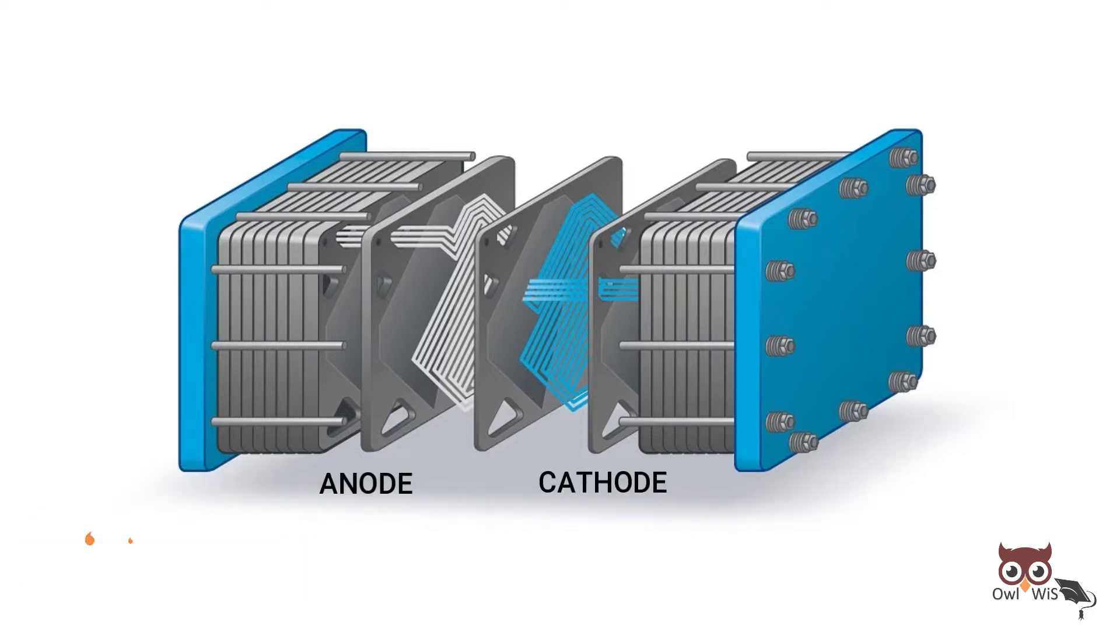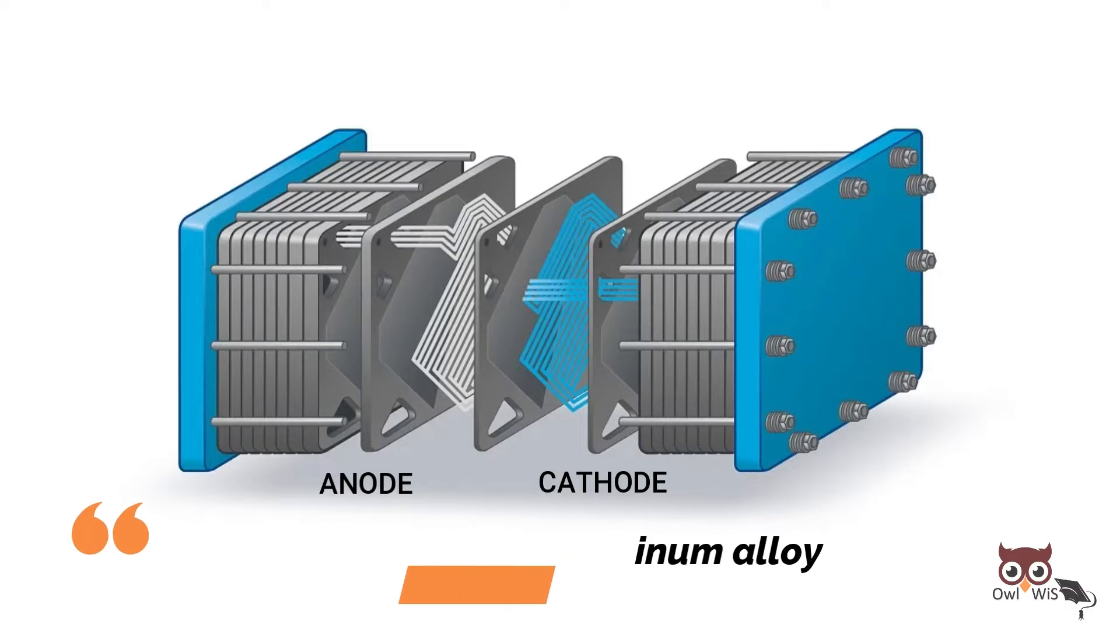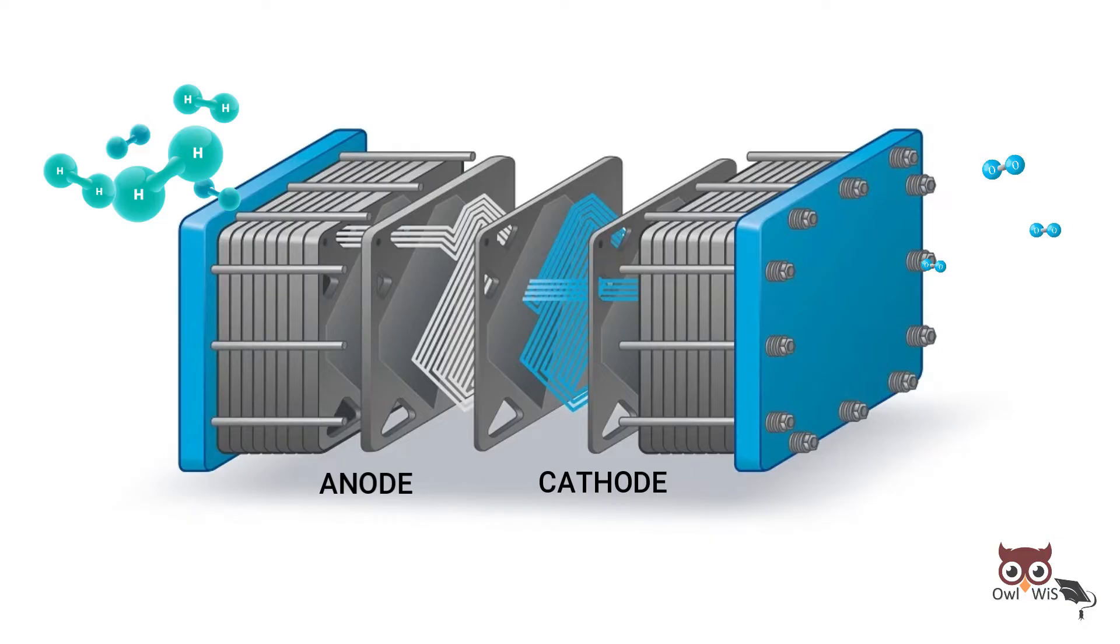Each electrode is comprised of a porous, high surface area material coated with an electrocatalyst, typically platinum or platinum alloy. The PEM fuel cell is fueled with pure hydrogen and oxygen or air as an oxidant.